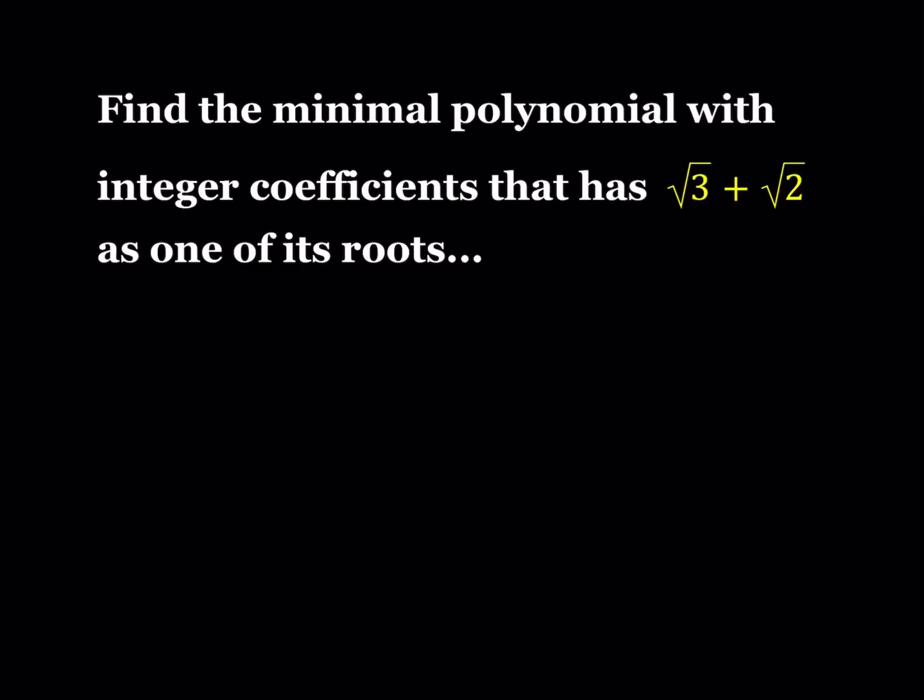We are given one of the roots of this equation, and it is a polynomial with integer coefficients, and we want it to be minimal. Minimal meaning that if you take a polynomial with certain roots and multiply it by a non-zero real constant, you're going to get the same roots. But we want it to be in the simplest form. So let's go ahead and find it.